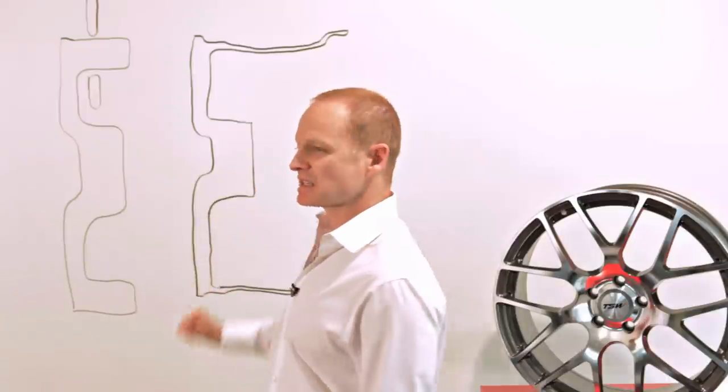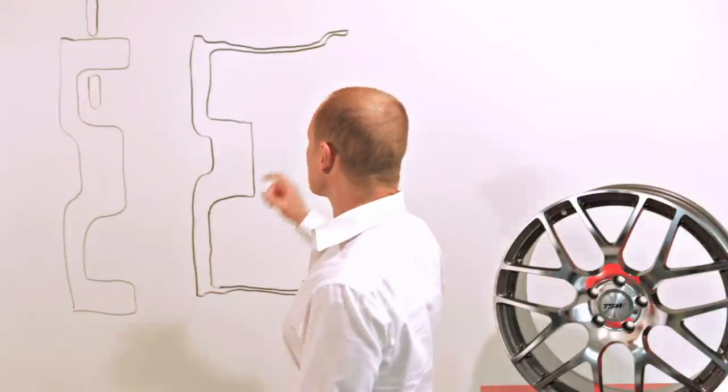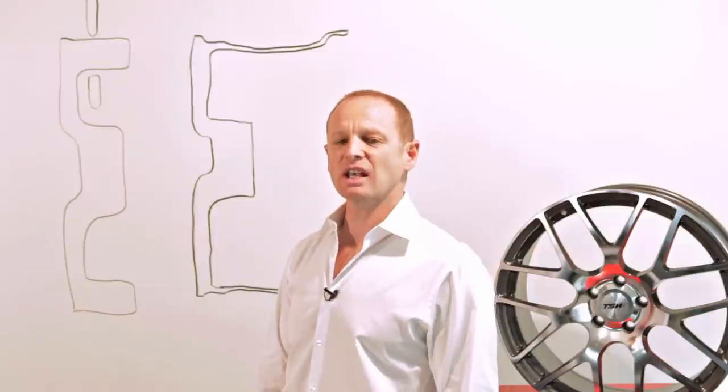The end result is this second diagram over here. What happens is this rim section, because it's lighter, means that the rotational mass of the wheel is much lighter. So your acceleration and your braking is much more effective because you have a lot less weight on the outside of the wheel, which is the most leveraged part of the wheel when you come into braking or when the car accelerates.